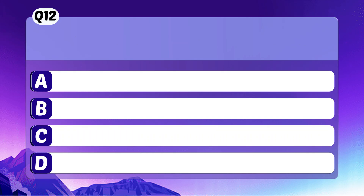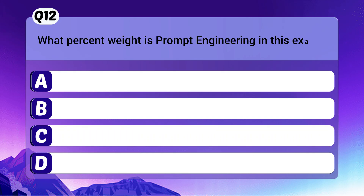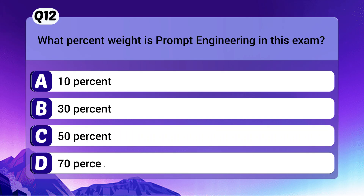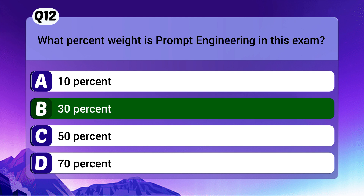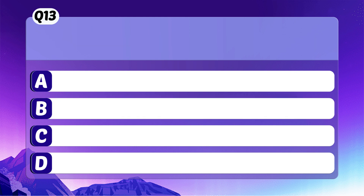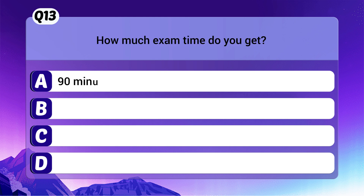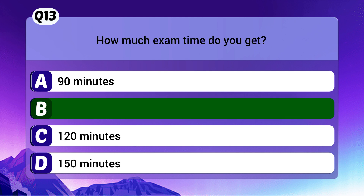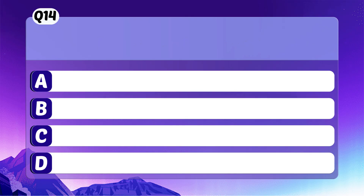Question 12: What percent weight is prompt engineering in this exam? The correct answer is B: 30%. Question 13: How much exam time do you get? The correct answer is B: 105 minutes.